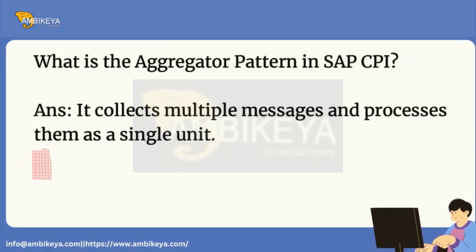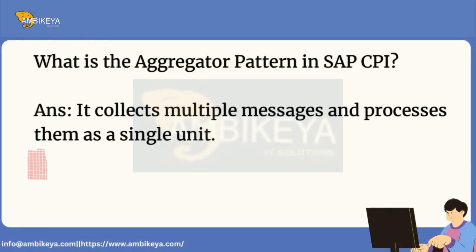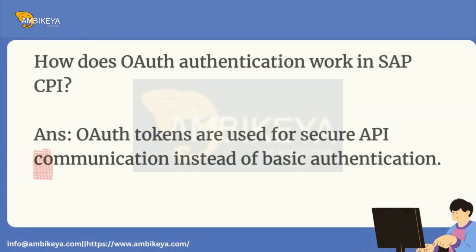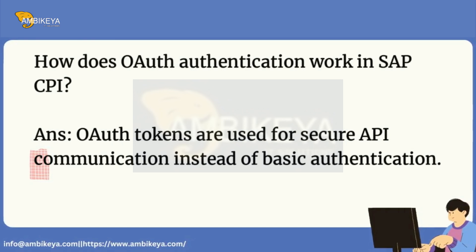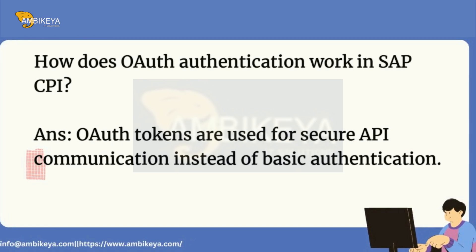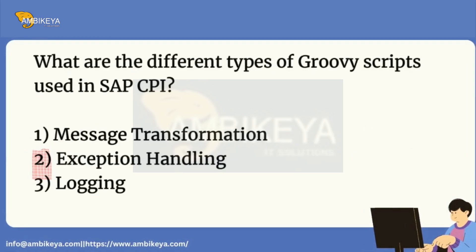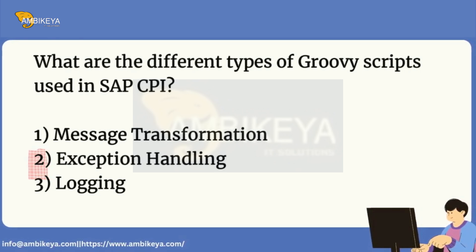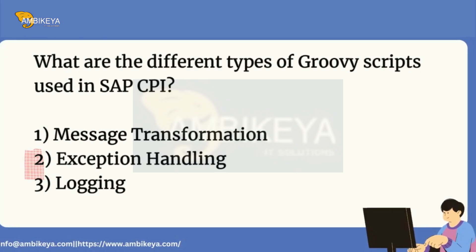What is the aggregator pattern in SAP CPI? It collects multiple messages and processes them as a single unit. How does OAuth authentication work in SAP CPI? OAuth tokens are used for secure API communication instead of basic authentication. What are the different types of Groovy scripts used in SAP CPI? 1. Message transformation, 2. Exception handling, 3. Logging.